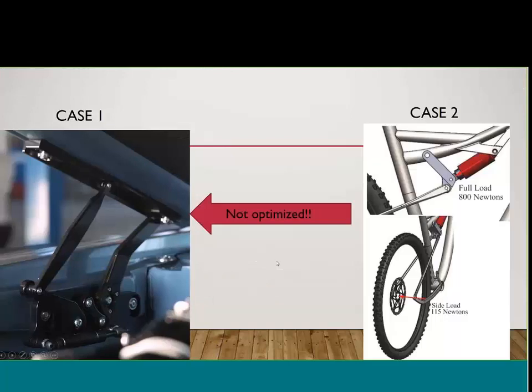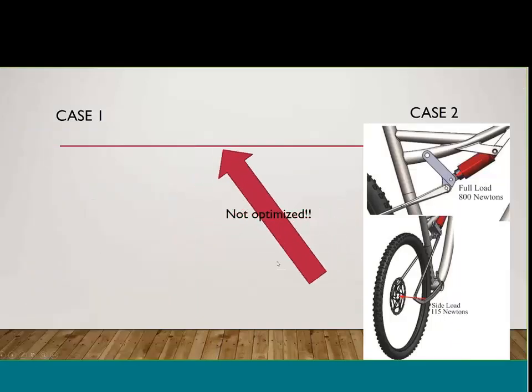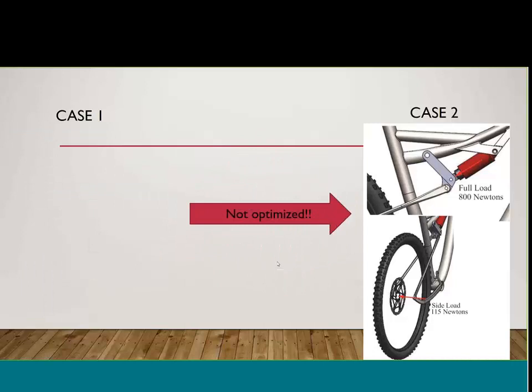Now we're going to look at the second case study. Case one was geared towards one specific loading scenario — the optimized shape is only valid for that one specific type and magnitude of loading. If you change any of that, the shape will change. In real life, parts experience multiple loading cases: a rest load, a live load, a dead load, and so on. There is support for that inside of simulation.